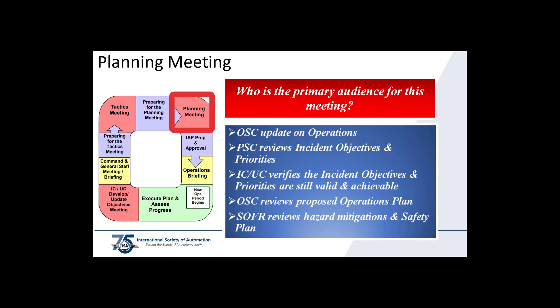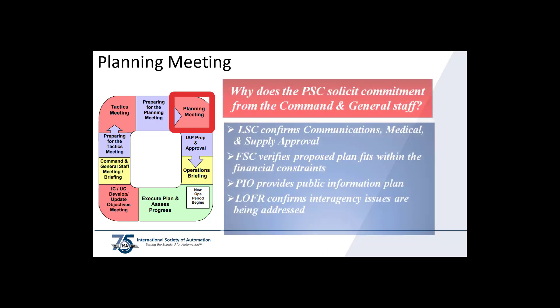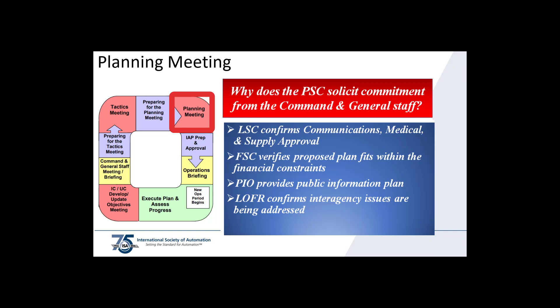The operations section chief provides an update on current operations activities. The planning section chief reviews incident objectives and priorities. Incident command or unified command verifies the incident objectives and priorities are still valid and achievable. The operations section chief reviews the proposed operations plan. Safety reviews the hazards and mitigations for the activities of the operations plan and then reviews the safety plan. The logistics section chief confirms communications, medical, and supply approval. Finance and administration verifies the proposed plan fits within the budget. The PIO provides a public information plan. The liaison officer confirms any inter-agency issues are being addressed.